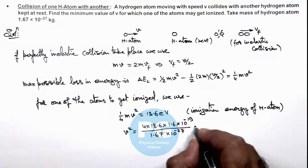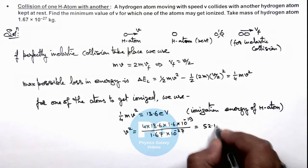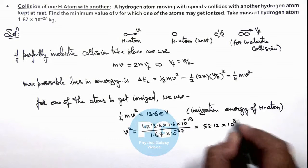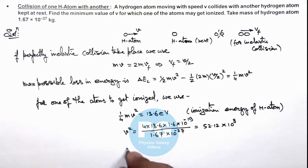On simplifying this will give us 52.12 × 10⁸, and taking the square root we get the value of v as 7.22 × 10⁴ meters per second. That is the result of this problem.